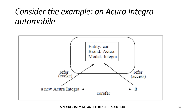Let's also see the example using an Acura Integra automobile. The entity is a car; its brand name is Acura and its model name is Integra. The first time we use the noun phrase 'a new Acura Integra' to evoke it into the picture. The second time we use the word it to refer to it — that is called accessing it. When you use 'a new Acura Integra' and 'it' to refer to the same entity, you call it corefer, as depicted in this example.